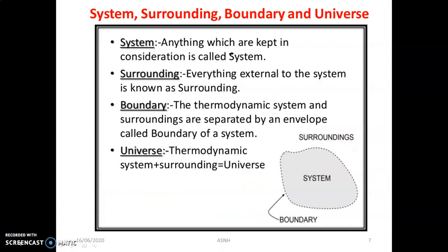The most basic concepts in thermodynamics are system, surrounding, boundary, and universe. The system is the space or region where the actual thermodynamic process is carried out. The region outside the boundary is called the surrounding. The boundary separates the system and surrounding — it may be rigid or movable and flexible depending on the application. The universe is the combination of the system and surrounding.